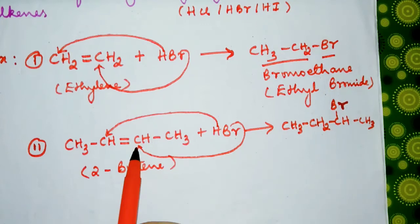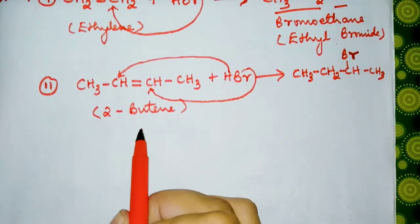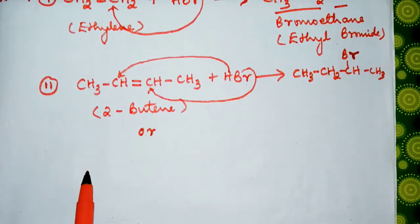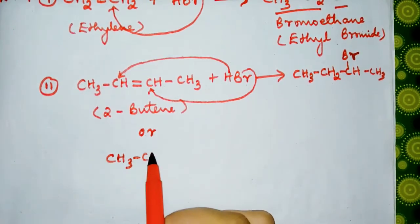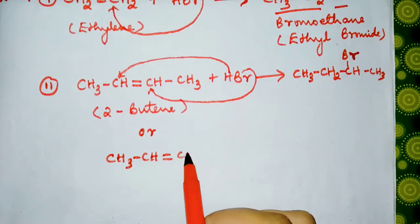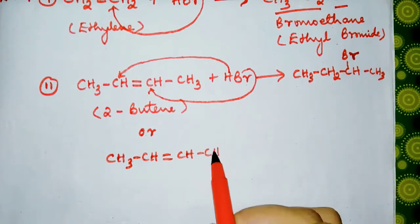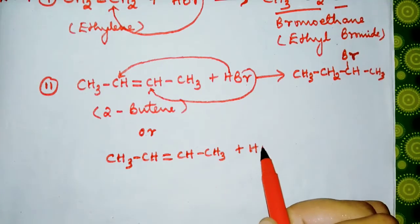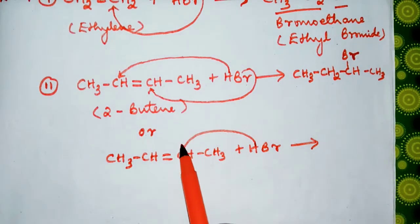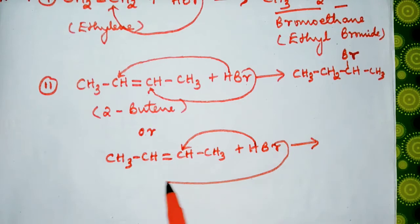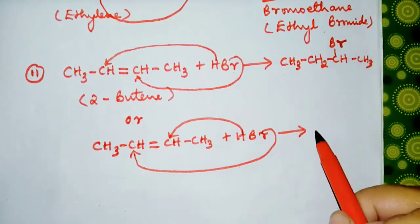Or, since it is a symmetrical alkene, we can have CH3-CH=CH-CH3 + HBr. Now this one can attack this carbon and this one can attack this, because this one is a symmetrical alkene.